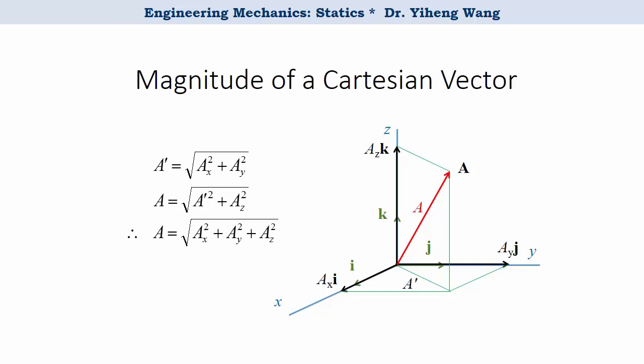And by applying the Pythagorean theorem twice, we can derive that the magnitude of the vector a equals the square root of a_x squared plus a_y squared plus a_z squared.